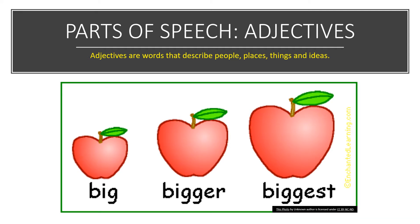For example, red is an adjective. Three is an adjective.